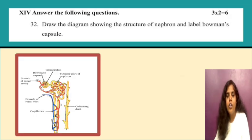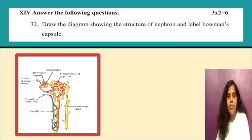Next: draw the diagram showing the structure of a nephron and label Bowman's capsule. You should draw the structure of the nephron and clearly label the Bowman's capsule part.